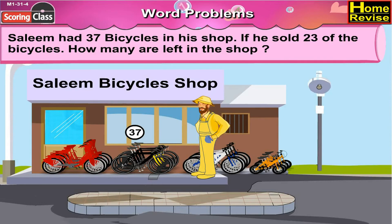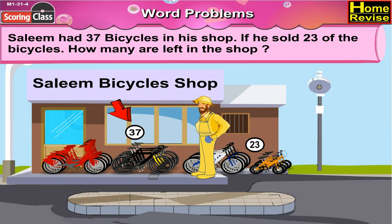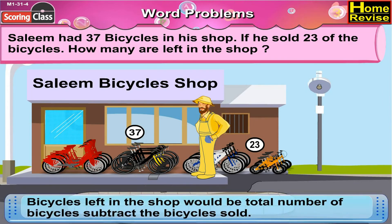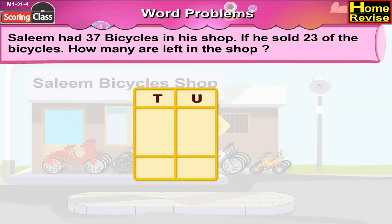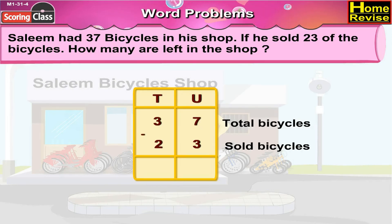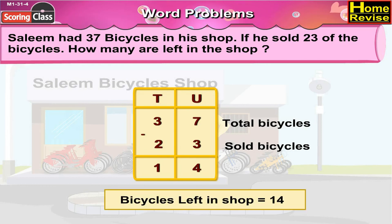Salim had 37 bicycles in his shop. If he sold 23 of the bicycles, how many are left in the shop? The bicycles left in the shop would be total number of bicycles subtract the bicycles sold. Arranged under tens and units, it is 37 minus 23. Units: 7 minus 3 is 4. Tens: 3 minus 2 is 1. So, total number of bicycles left in the shop are 14.